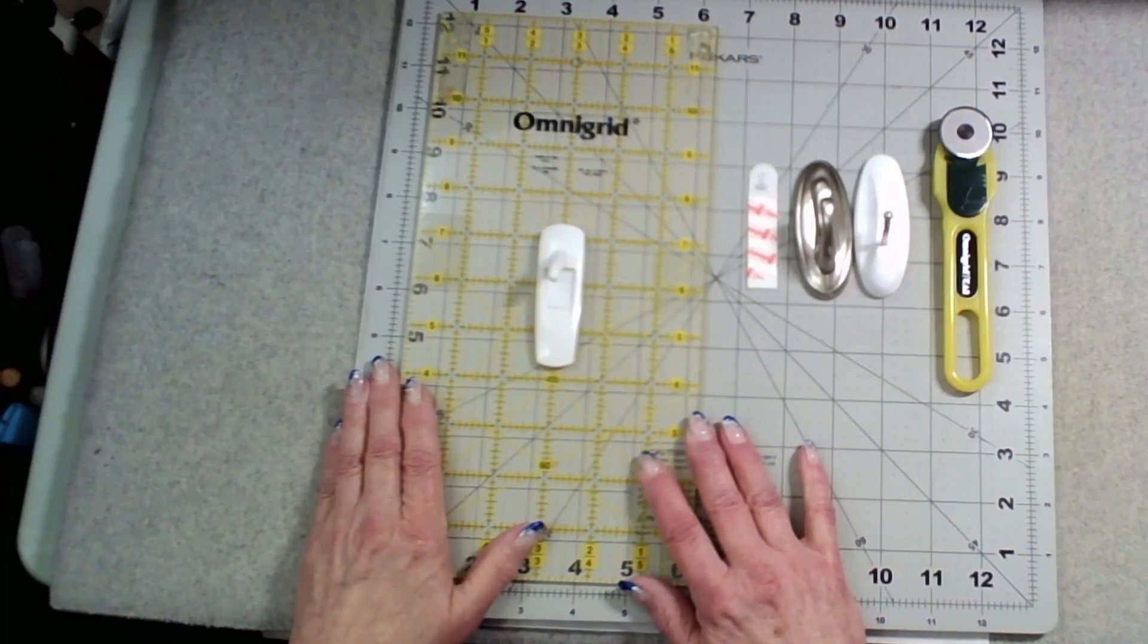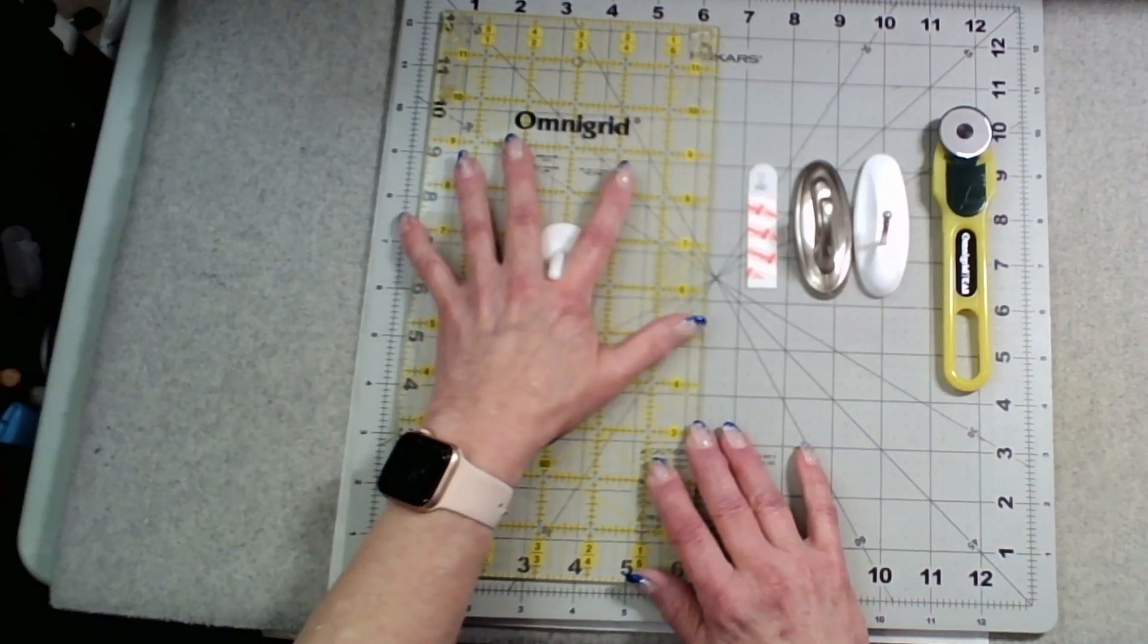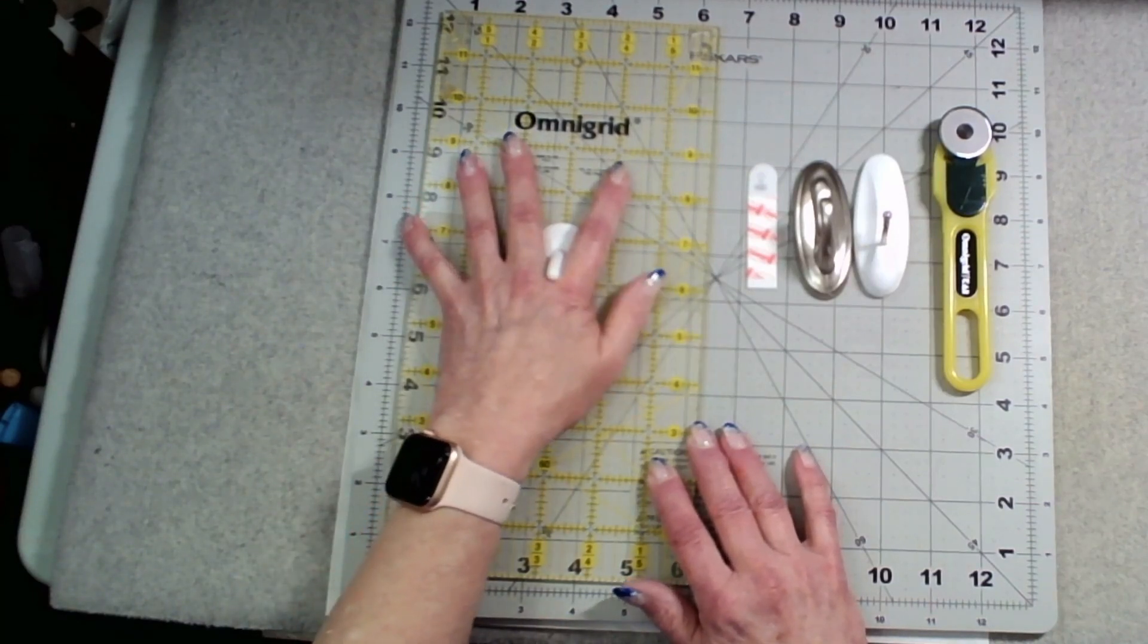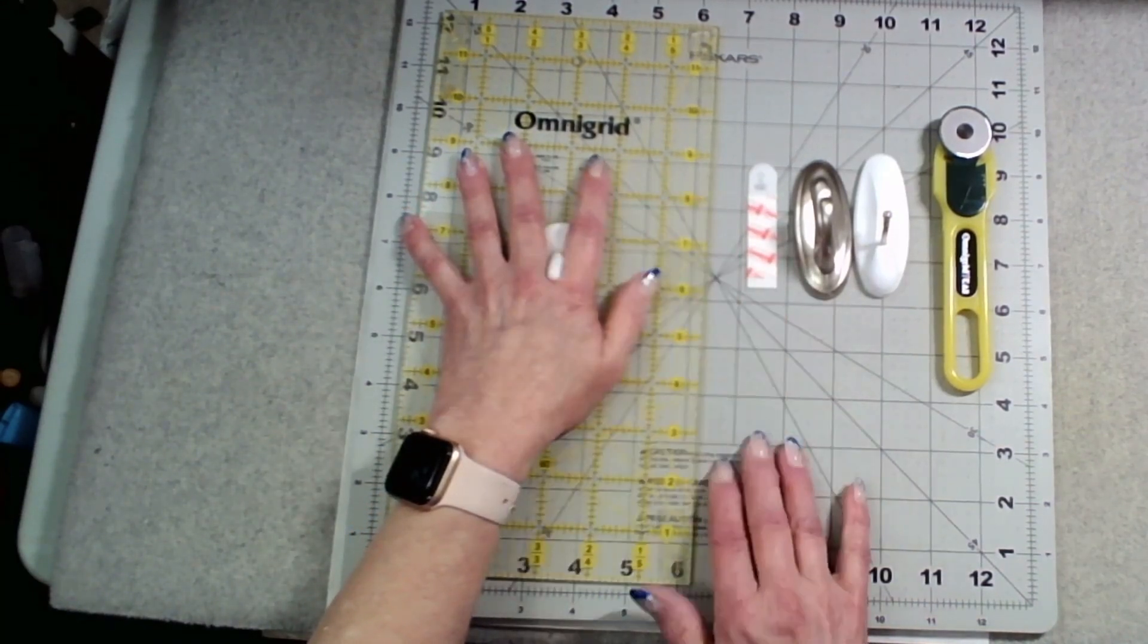I can now place my ruler down, put my fingers in between, put my pinky finger on the side, and my fingers are away from the cutting surface.